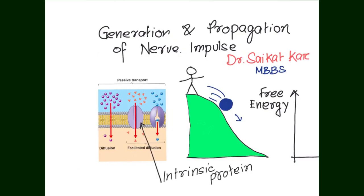Another type is extrinsic protein or peripheral protein, which remain loosely bound to the lipid bilayer. As we can see in the diagram, there are some proteins which can be inside or outside of the cell, but they are peripheral — loosely bound — so they are called extrinsic.